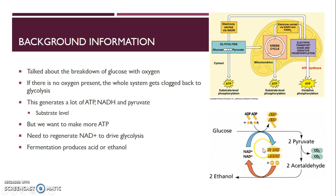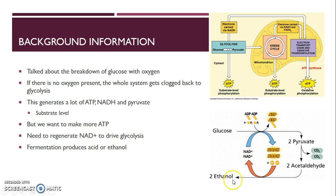The way you regenerate NAD+ is by going through fermentation. Pyruvate is produced, and then NADH reduces pyruvate — NADH gets oxidized back to NAD+. Now that we have more NAD+, we can drive glycolysis to continue. This is a cyclic system that powers glycolysis. Because you reduced pyruvate, you can then create products — either ethanol or lactic acid, depending on the type of fermentation. This way you can generate ATP for cellular work without needing the electron transport chain.